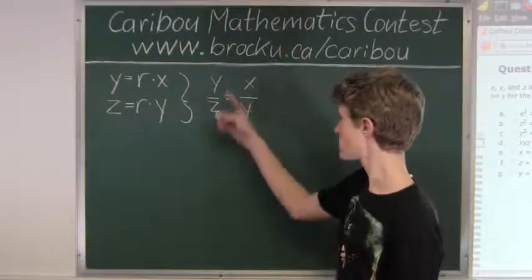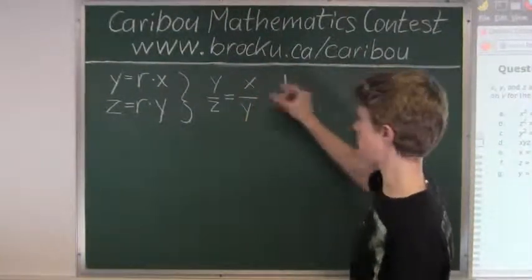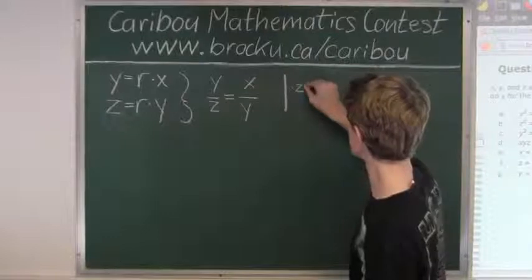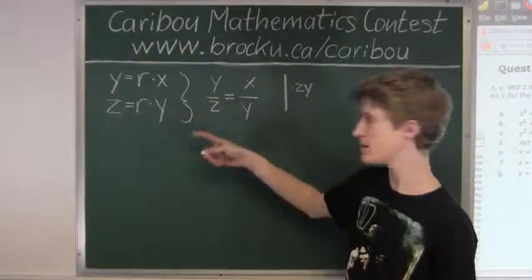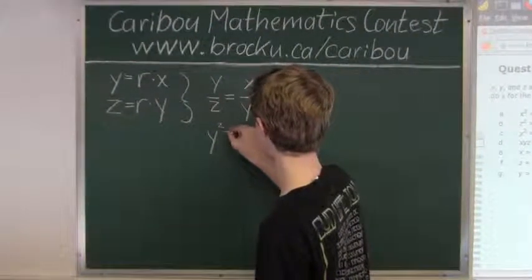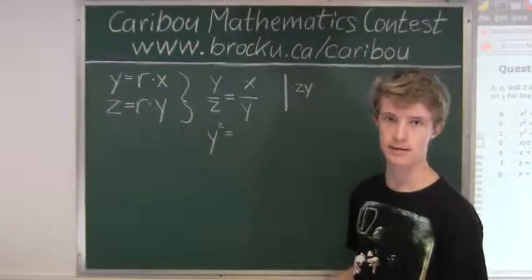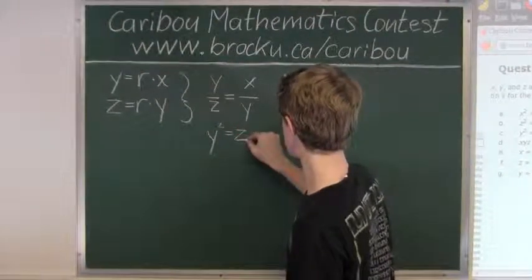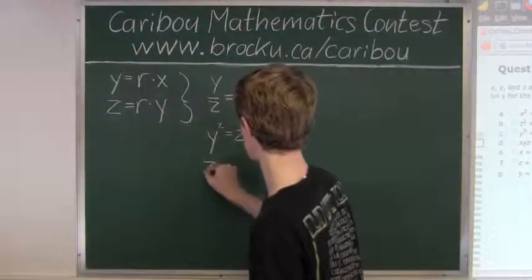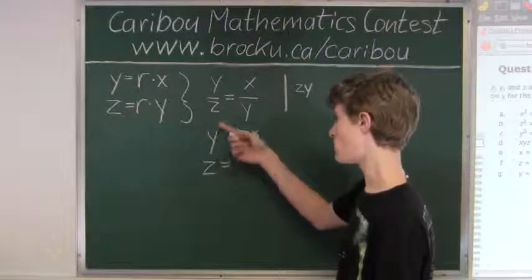Now to simplify this relation and get rid of the denominators, we will multiply by the denominators, so times Z times Y. Y over Z times Z is Y times Y, which is Y squared. X over Y times Y is X times Z, which is ZX. To solve for Z we will divide both sides by X, so we have Y squared over X.